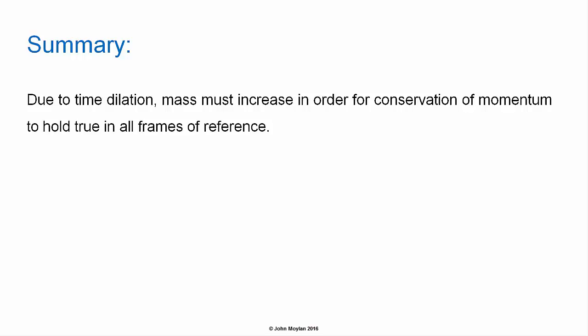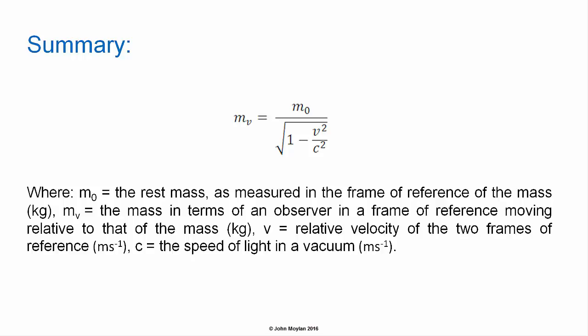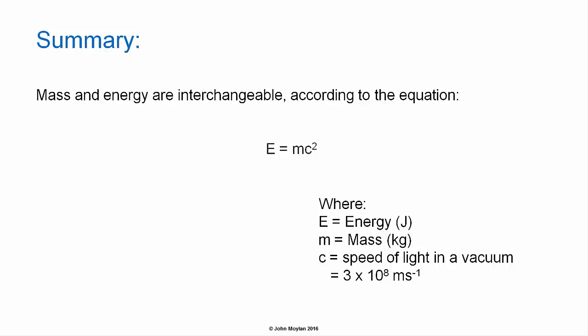Summary: Due to time dilation, mass must increase in order for conservation of momentum to hold true in all frames of reference. Relativistic mass can be calculated using the formula: m_v = m₀ / √(1 − v²/c²), where m₀ is the rest mass as measured in the frame of reference of the mass, m_v is the mass in terms of an observer in a frame of reference moving relative to that mass, v is the relative velocity of the two frames of reference, and c is the speed of light. Mass and energy, according to Einstein, are interchangeable — they are the same thing. The rest energy of an object is given by E = mc².